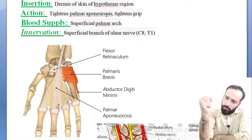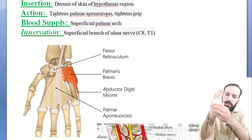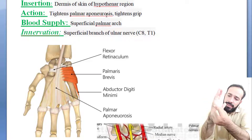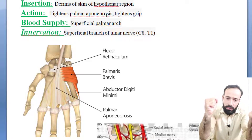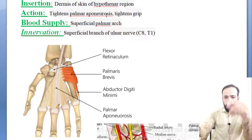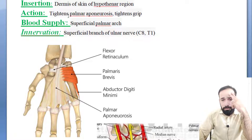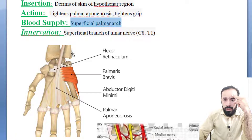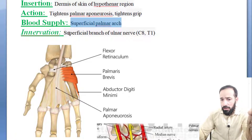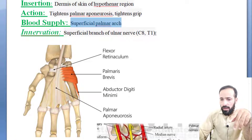The action of palmaris brevis is that it tightens the palmar aponeurosis, helping in grip. When it contracts, it assists in gripping an object. Its blood supply comes from the superficial palmar arch.